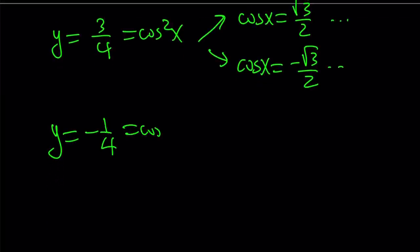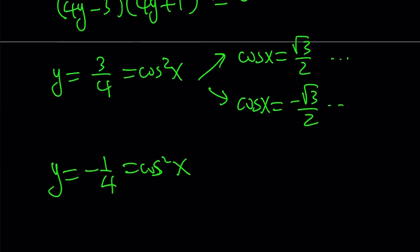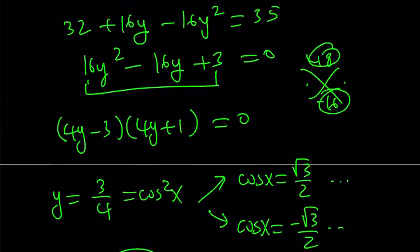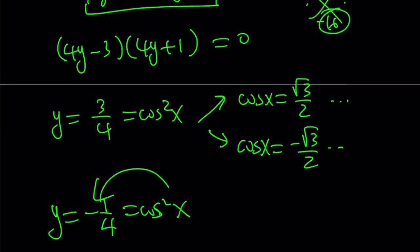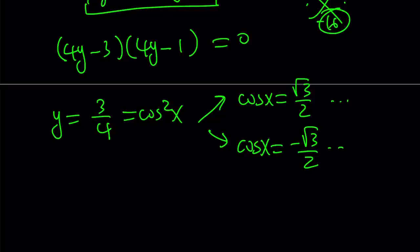Or you get y equals negative one fourth, right? But unfortunately, when you set it equal to cosine squared, you don't get a real solution because no real number squared can be negative. Alright? And I think we made a mistake here. Okay, never mind. This is supposed to be a minus sign. I just realized. Because we were supposed to get a bunch of other solutions.